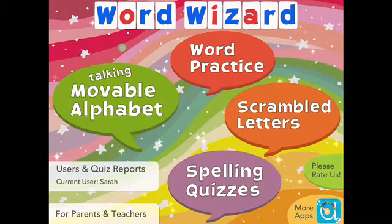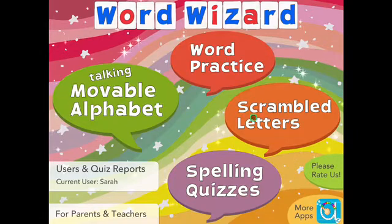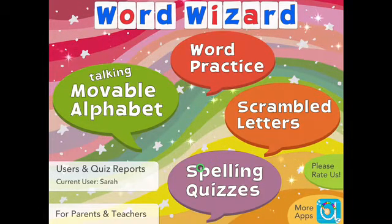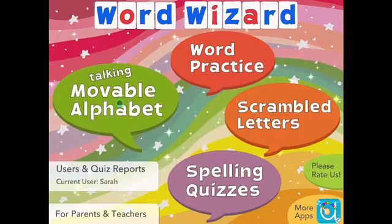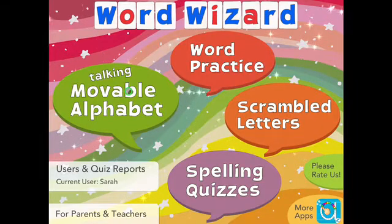When you're using the Word Wizard app, initially when you come into it, you're presented with four different options: the talking moveable alphabet, word practice, scrambled letters, and spelling quizzes. These three activities we tend to use during the course of the week to practice our words. The moveable alphabet is just where you have the letters at the bottom of the screen and you can bring them up and make any words and have a little bit of a play, which students quite enjoy.